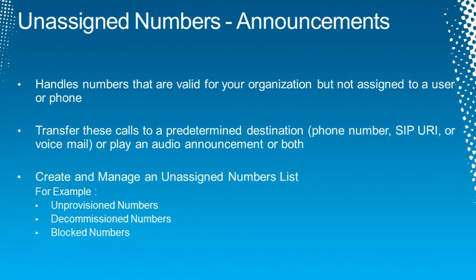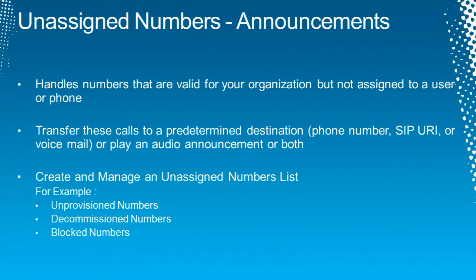You can also use unassigned numbers for blocking calls. Instead of explicitly going into each route and defining all the numbers you want blocked, you can list them here — for instance, 900 numbers in the US — and if somebody tries to dial one, you can route it to an announcement saying the number is not allowed. You can also pick individual numbers, like a help desk number within a company that changed, and provide a special announcement for that specific number.